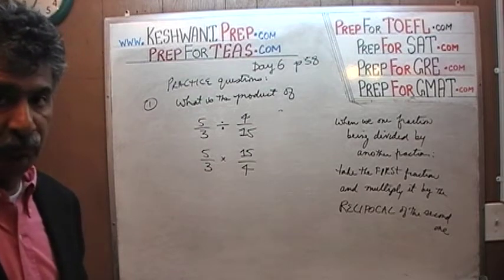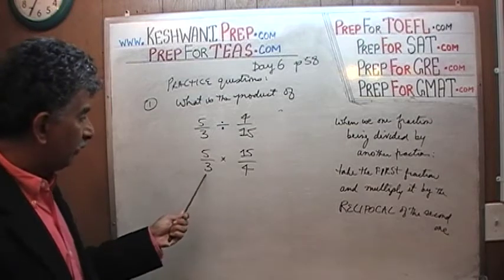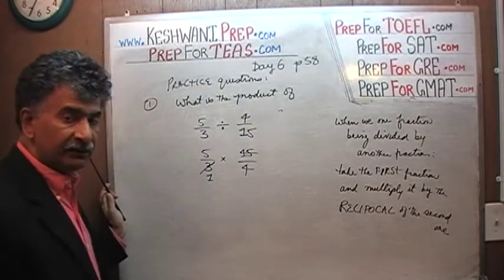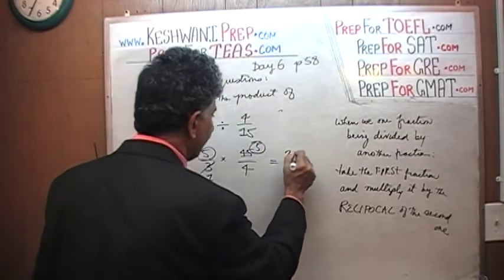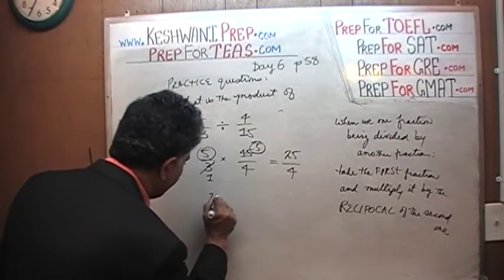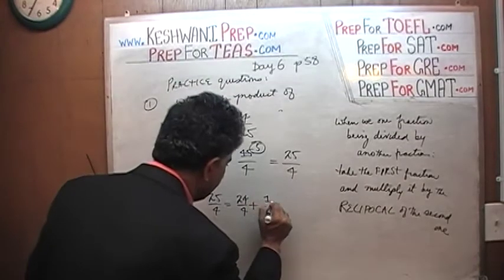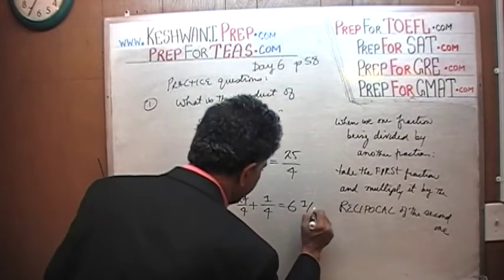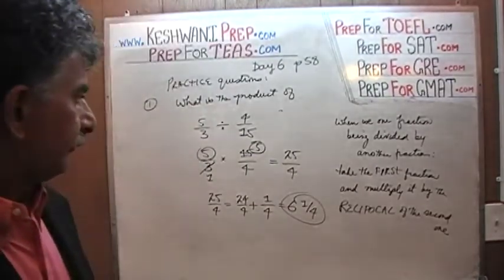Always look for reductions before carrying on. We see fifteen and three — dividing top and bottom by three, the three drops out and becomes one, and fifteen becomes five. So we end up with five times five, which is twenty-five over four. Twenty-five over four is twenty-four over four plus one over four — twenty-four over four is six — so our final answer is six and a quarter.